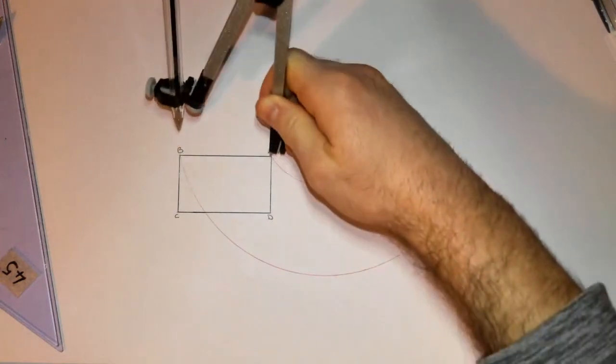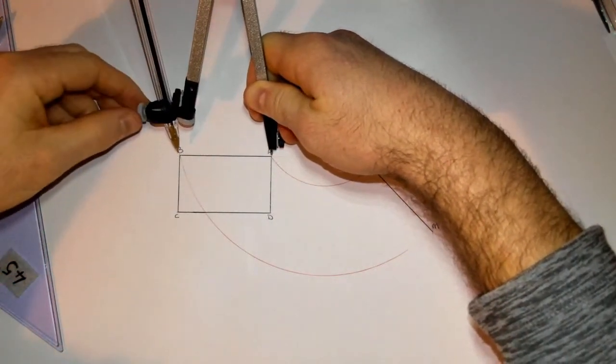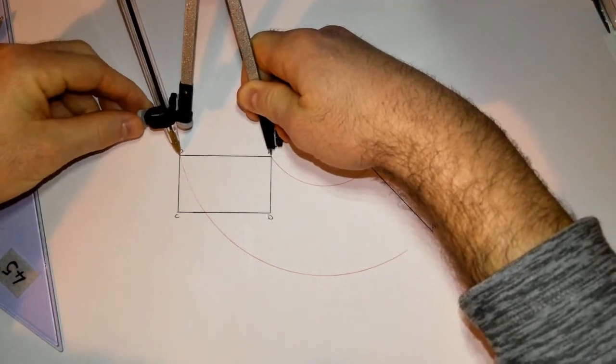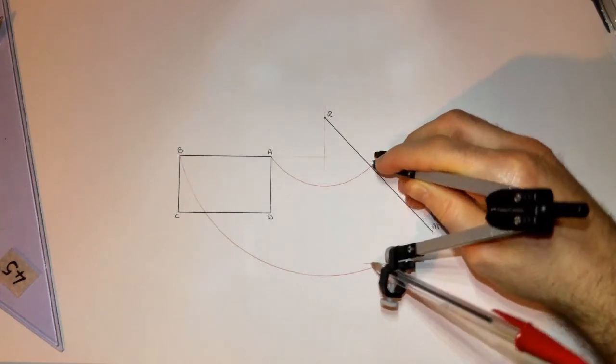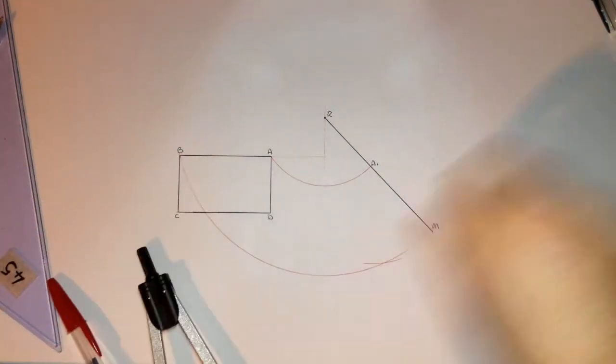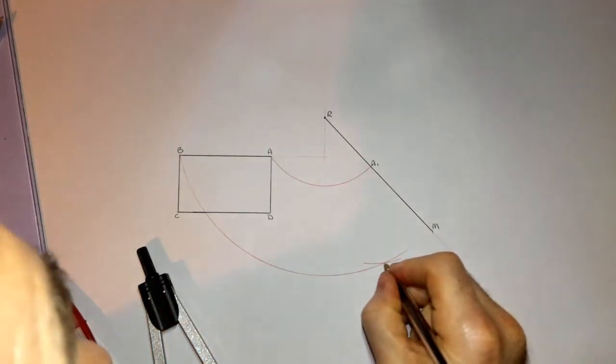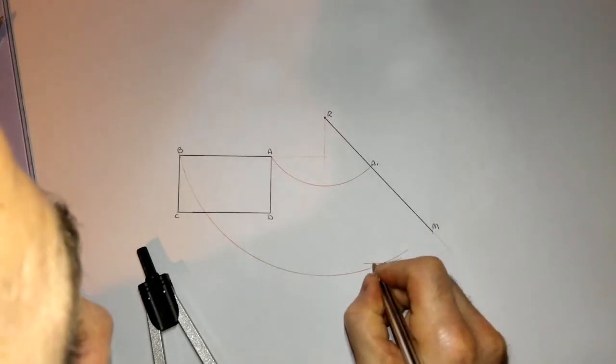So if we take the distance from A to B like this, just make sure it's fully accurate there, that distance there, I can now come to where A1 is and scribe an arc through the radius RB. And you can see where those two arcs crossed each other down here, where the two arcs crossed each other, that point right there now is B1.